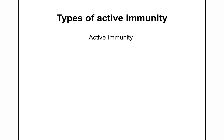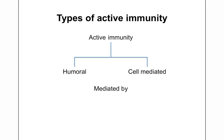Active immunity usually operates in two different ways: humoral and cell-mediated. Humoral immunity is mediated by antibodies. Entry of the antigen stimulates or activates the B cells; the activated B cells proliferate and differentiate into plasma cells, which produce antibodies specific for the antigen that activated the immune response.